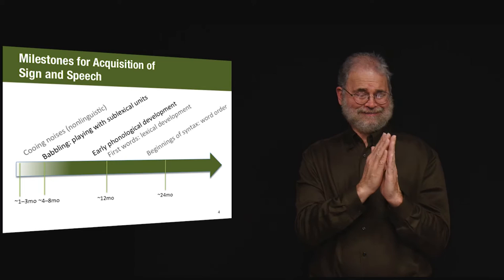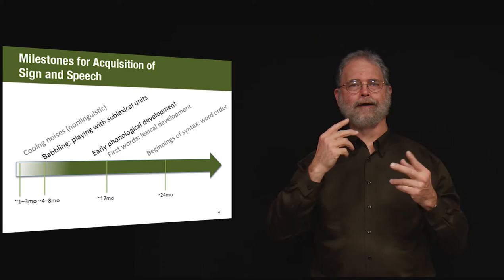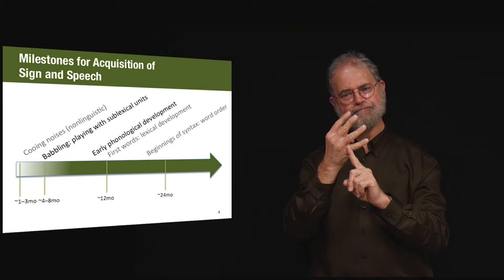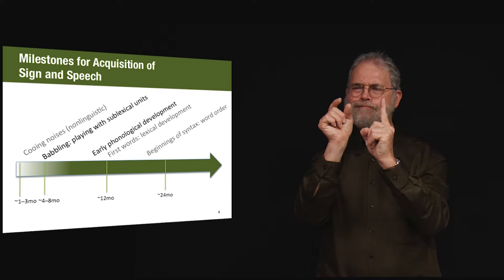During the first few months of life, newborns will produce cooing sounds such as ah or ooh and uncoordinated movements of the hands and arms. By the time the child reaches about four months of age, the baby will start to produce babbling, playing with the pieces of words, syllables, and segments.